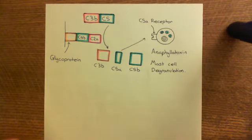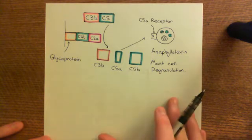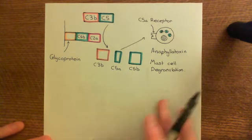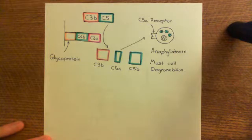So, C5B is going to assemble with a bunch of other complement proteins to form what's known as the membrane attack complex, which is going to cause osmotic lysis of the microbe. Let's see how this works.